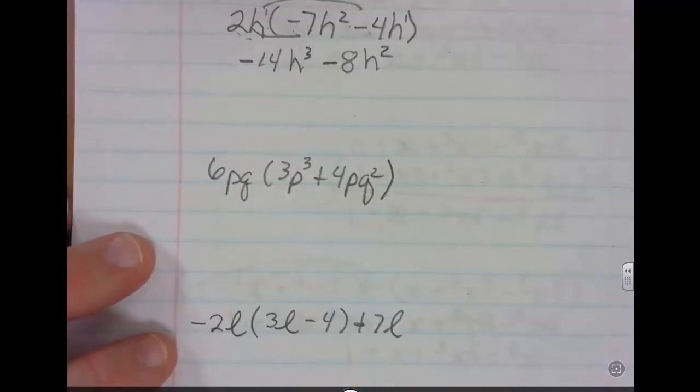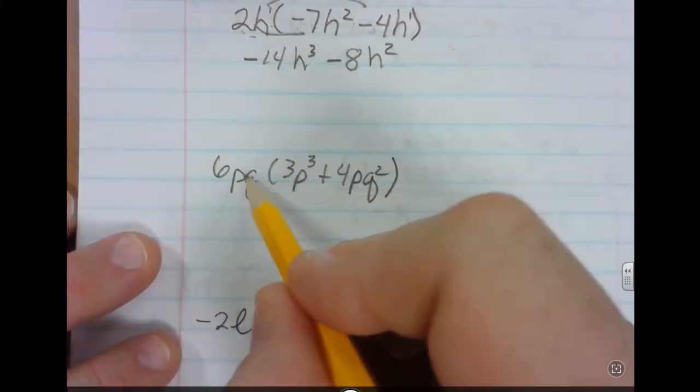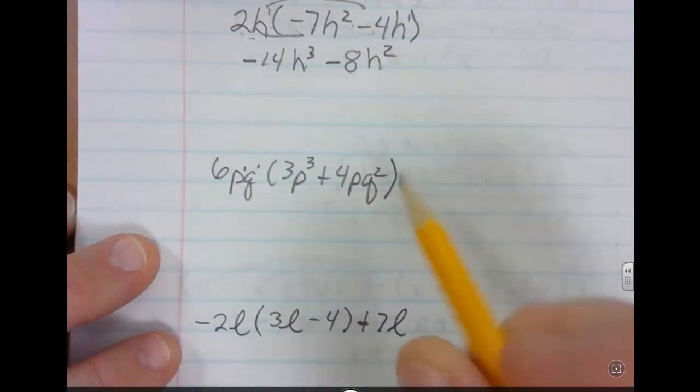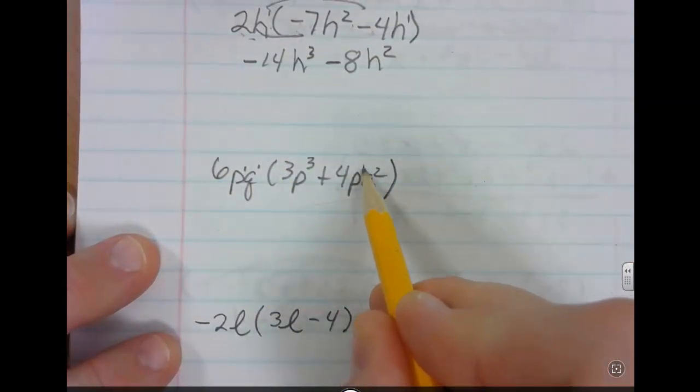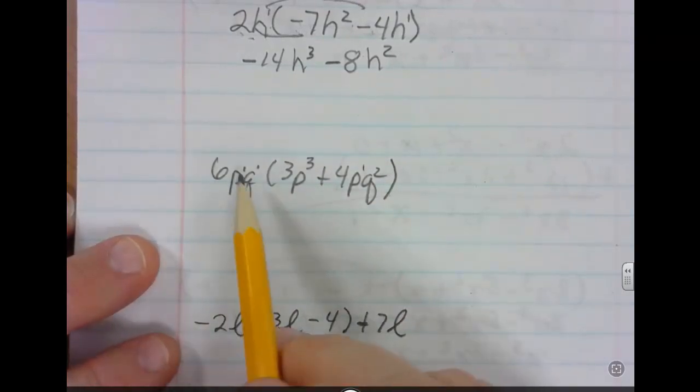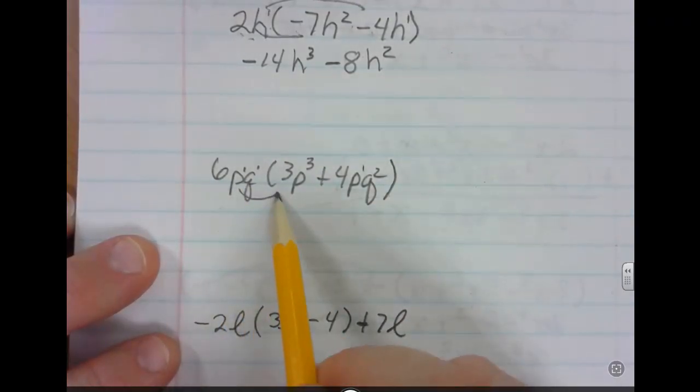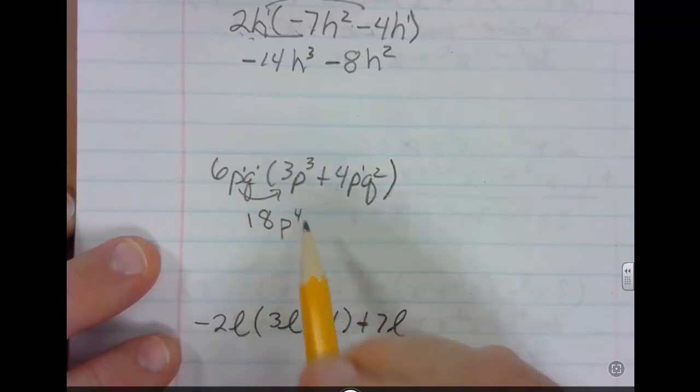We'll try it down here with a couple of different variables. Remember this one has a first degree. This is a first degree, and this one's also a first degree, so you might want to put those in there. So we'll multiply with the first one right here. So 6 times the 3 is going to give you 18. p of the first times p of the third is going to give you p to the 3 plus 1 or p to the fourth power.